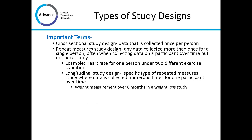Let's clarify some terms we'll be talking about today. Cross-sectional study design basically implies any data that is collected once per person. Repeated measure study design means any data that's collected more than once for a single person — often when collecting data on a participant over time, but not necessarily. An example where you're not collecting data over time might be heart rate for one person under two different exercise conditions.